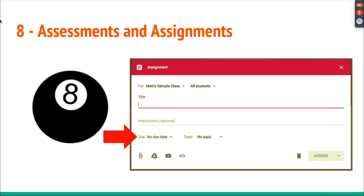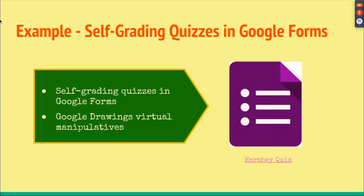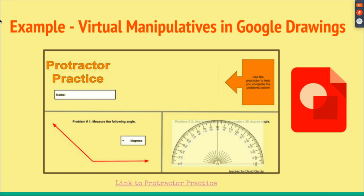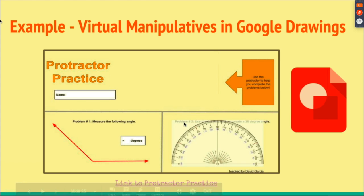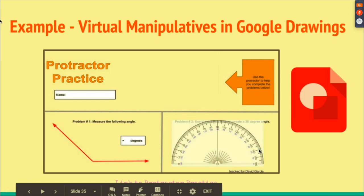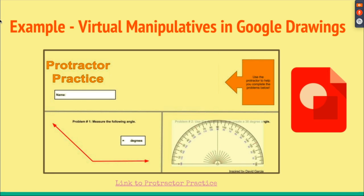In the Classwork tab you can put in a self-grading quiz in Google Forms. You can also create a virtual manipulative in Google Drawings — for example, a transparent protractor that students can move to measure an angle and use drawing tools to draw. Note it works really well with Chromebooks and laptops but not very well with iPads.